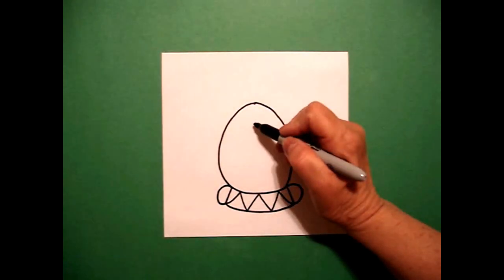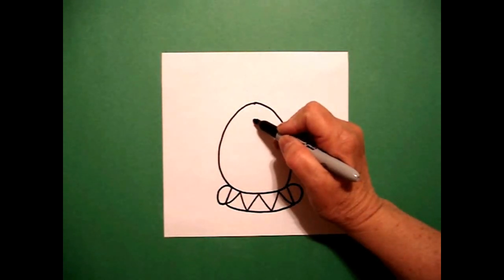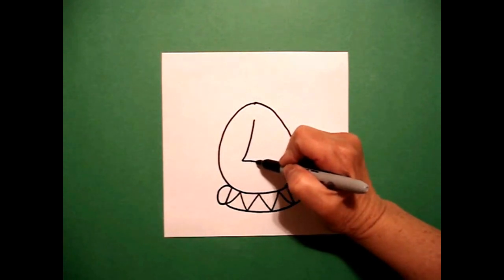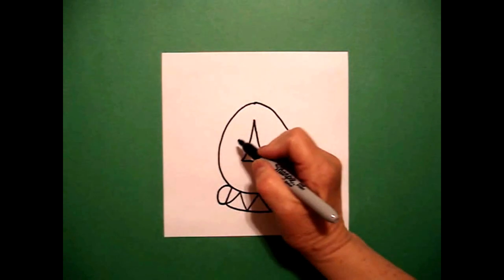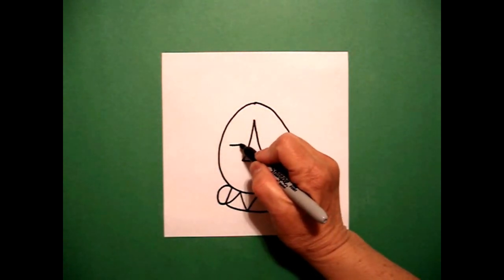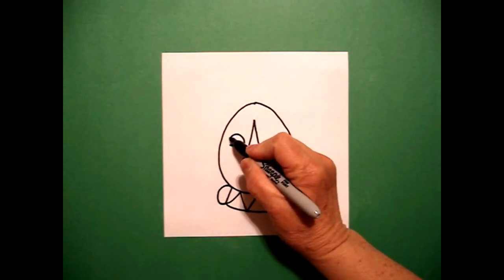I'm going to come right in the center of my oval and I'm going to draw a skinny triangle and on the left hand side I'm going to draw a straight line, curve line, connect.